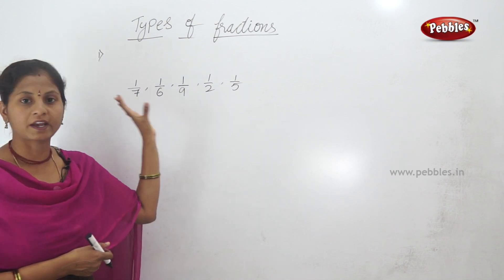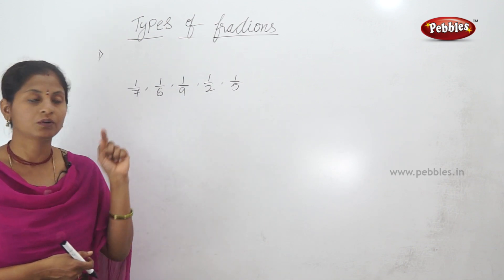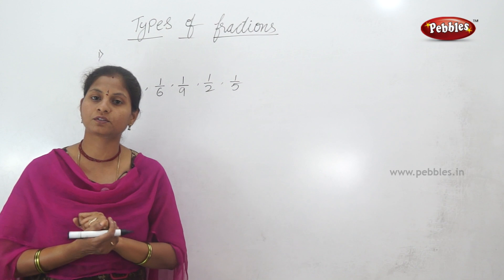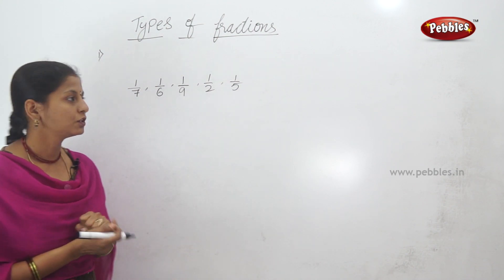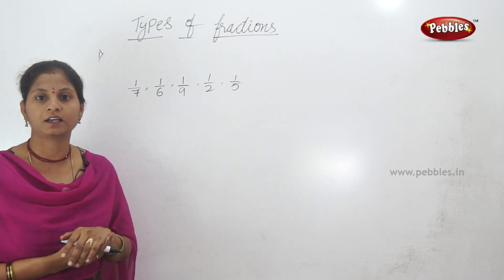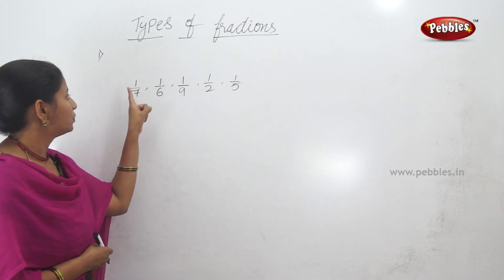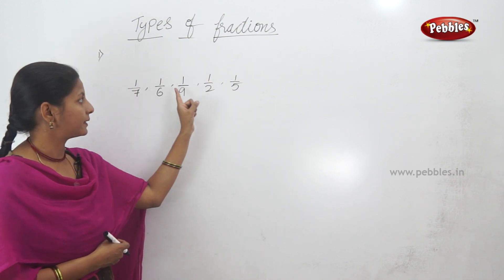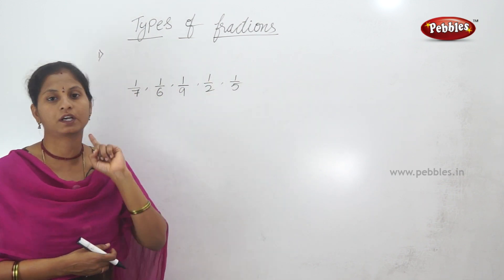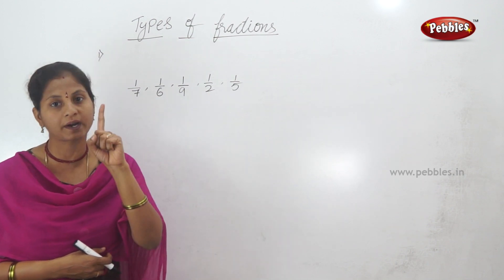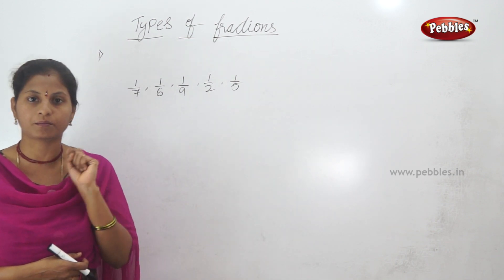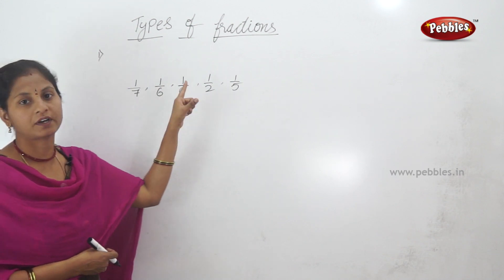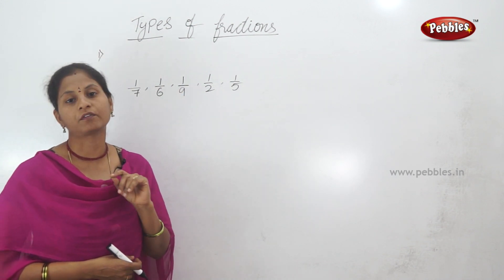Now here we have 1, 2, 3, 4, 5 fractions. So when we look at these fractions, we have a common one — the numerators are all 1. That means the number above the line is 1 in all these fractions. So, in fractions where the numerator is 1, we have unit fractions.